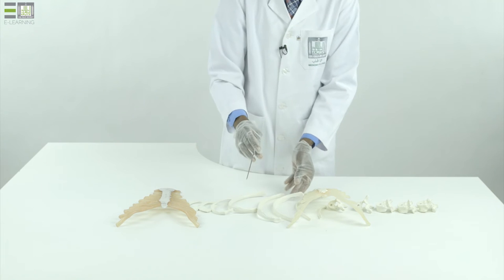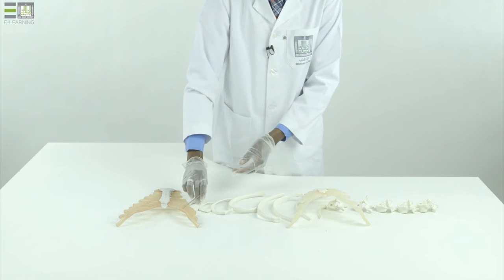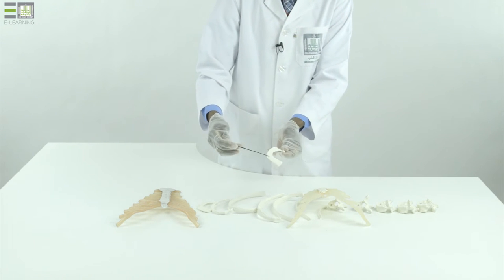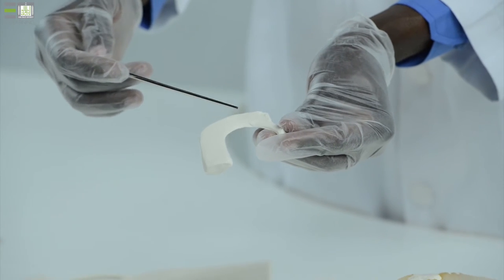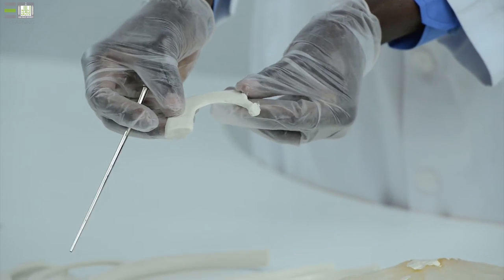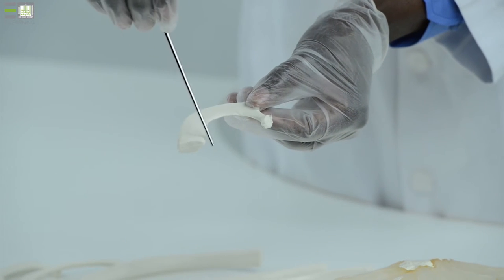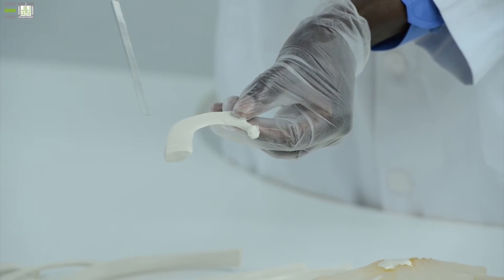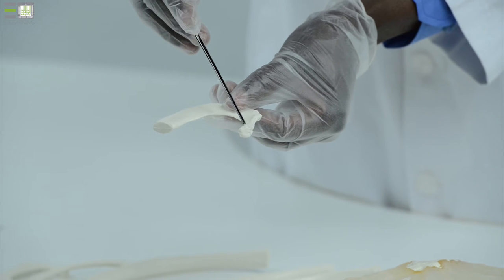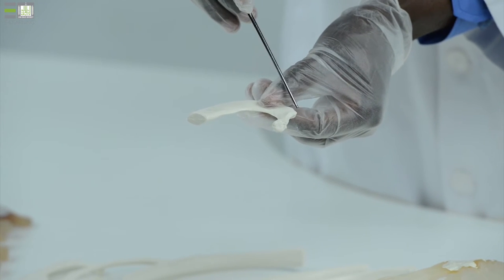We have atypical rib, starting from the first. The first is considered as atypical, due to presence of upper and lower surfaces, inner and outer border. It has head, neck, and tubercle.